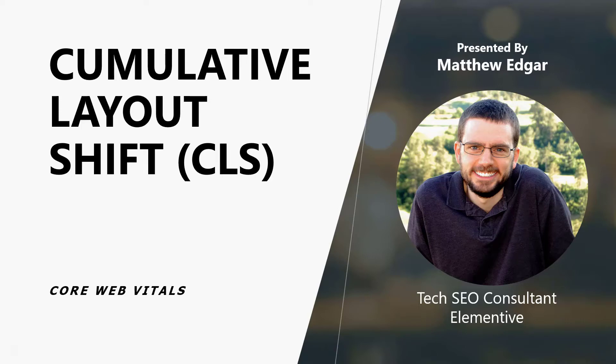One of Google's newest ranking factors is Core Web Vitals. Core Web Vitals represents three different metrics that look at and analyze your website's user experience. In this video, let's talk about one of those three metrics: cumulative layout shift, or CLS.